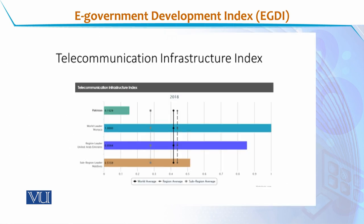When we talk about the Telecommunication Infrastructure Index, the world leader is Morocco and its score is 1. The regional leader is the United Arab Emirates with a score of 0.85, and the sub-regional leader is Maldives with a score of 0.51. Pakistan's score is 0.15, which is quite low compared to the sub-regional, regional, and world leaders.